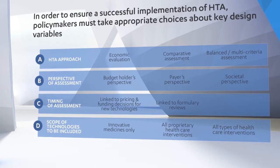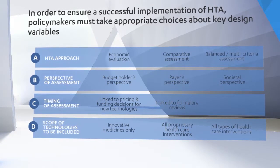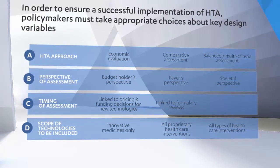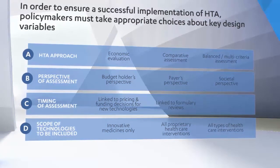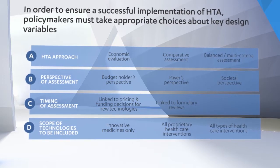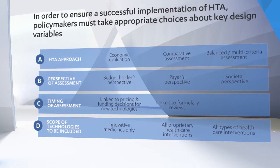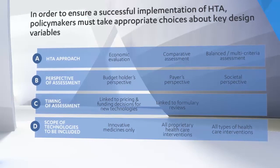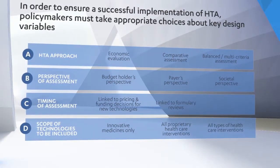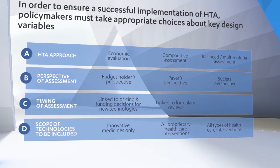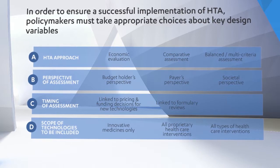The second approach is comparative assessment. In this approach, you try to think about the clinical benefit of a technology and you try to compare it to other available technologies. Thus, the clinical benefit becomes added or relative clinical benefit. In this approach, you don't necessarily want to quantify this benefit — rather, you want to describe it in mostly clinical terms. And finally, there is the third approach: balanced or multi-criteria assessment. This is not considered by everyone as an approach on its own, as it's essentially the combination of the previous two. There are several types of multi-criteria assessment systems.